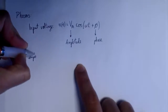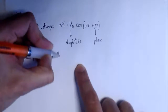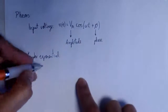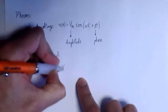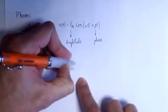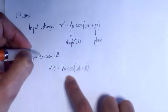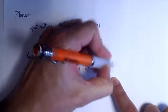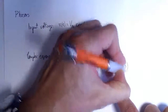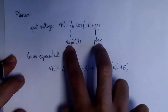Dealing with circuits with inductors and capacitors with this type of input is complicated. If we want to find currents or voltages, we will have to solve differential equations. So we usually express this differently in order to simplify the calculations. We usually work with complex exponentials. What we do is take the real input — the cosine — that we are applying to the circuit, and we add an imaginary part.